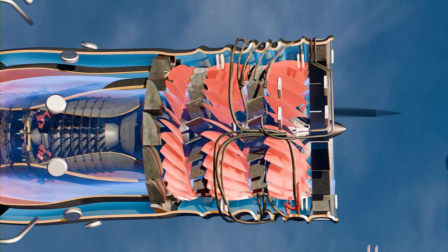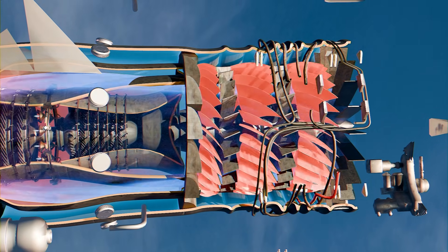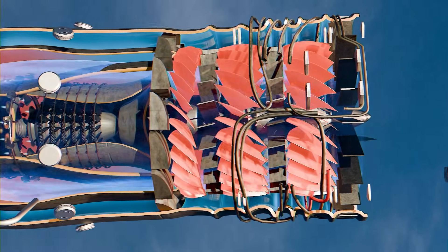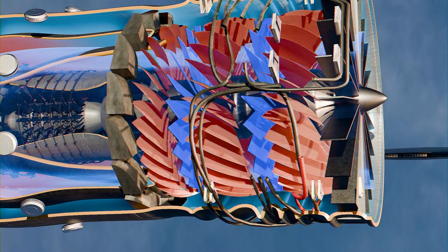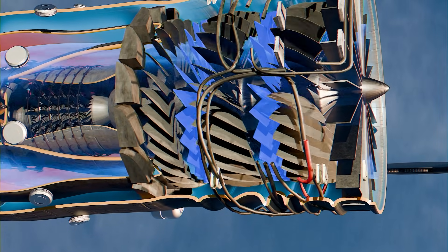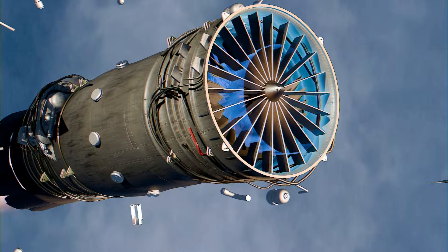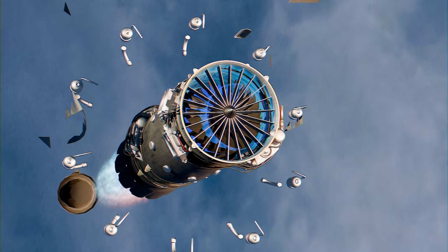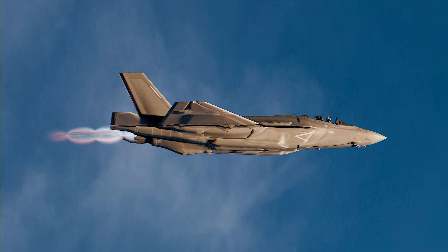Unlike a fixed turbofan, this fan is built to decide in real time where the incoming mass flow goes. Air enters through the intake and immediately passes the variable inlet guide vanes (IGVs), pivoting blades that set the angle of attack on the first fan stage. These vanes, controlled automatically by the FADEC (Full Authority Digital Engine Control), ensure smooth entry regardless of speed, altitude, or throttle change.